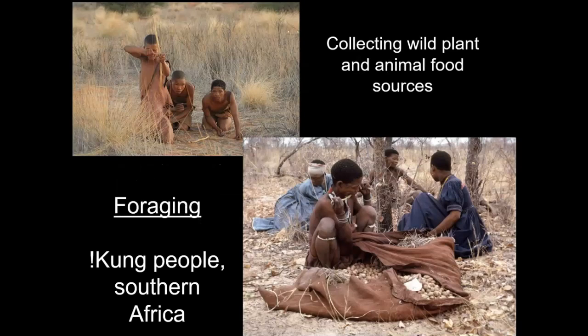We're going to start with foraging, which in the past was often called hunting and gathering. Foraging is the more contemporary term. People using this technique collect food by making use of wild plant and animal food sources in the environment where they live — foragers don't plant crops. The expertise of the forager is about knowing when particular plants produce edibles, when and where animals migrate, and how to capture them. It's about being very good at exploiting the natural resources in that area.